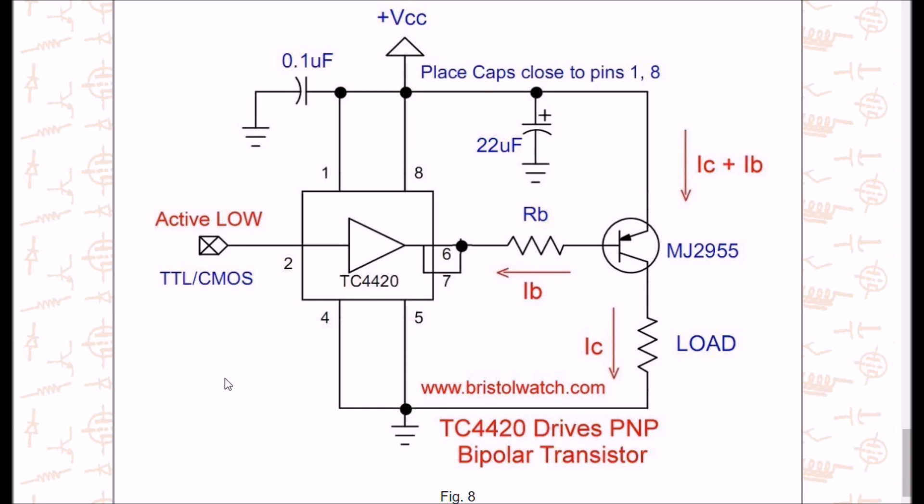Alternatively, I can use the TC4420 to drive a PNP power transistor to act as a high side switch. Again, you have to calculate your IB with the appropriate base resistor. And this might be useful for something.